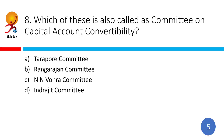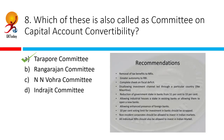Which committee is also called the Committee on Capital Account Convertibility? The correct answer is the Tarapur Committee. The Committee on Capital Account Convertibility, commonly known as the Tarapur Committee, was formed by the Reserve Bank of India to study the feasibility of capital account convertibility in India. It submitted its final report in 1997.